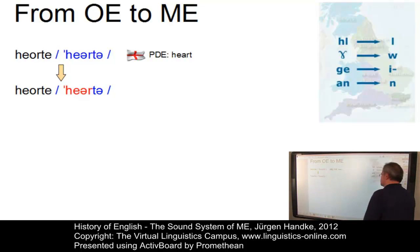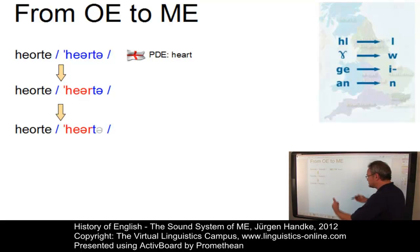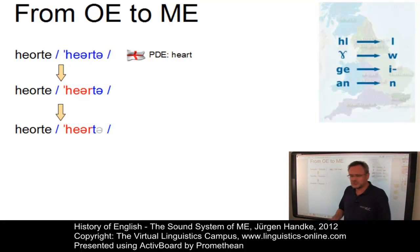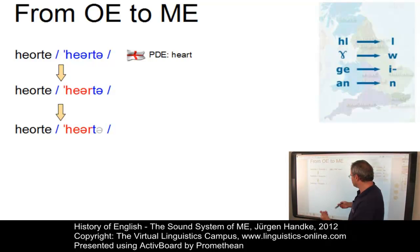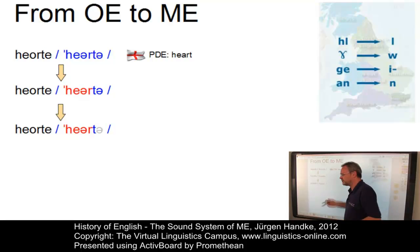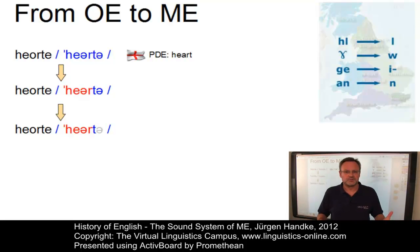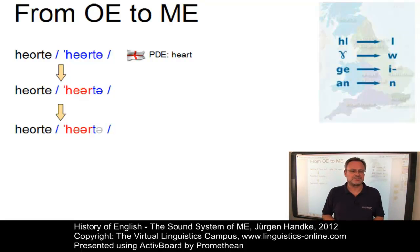Here is the second step that led to this reduction: the loss of the final unstressed vowel, which led to the pronunciation of 'hærte' becoming 'hært'. And from here it is only a small step to present-day English 'heart'.